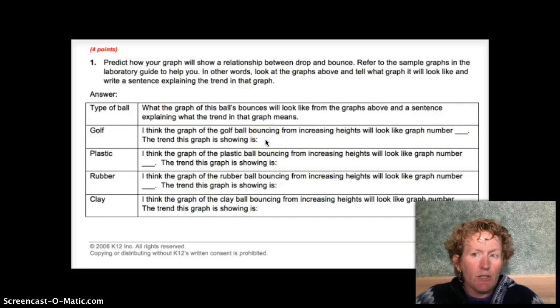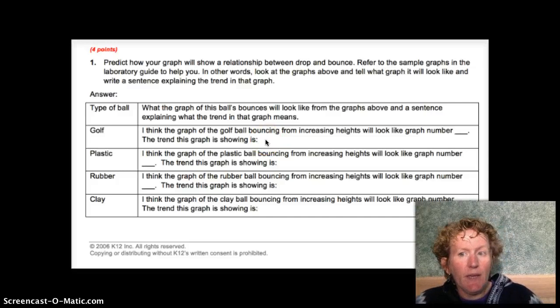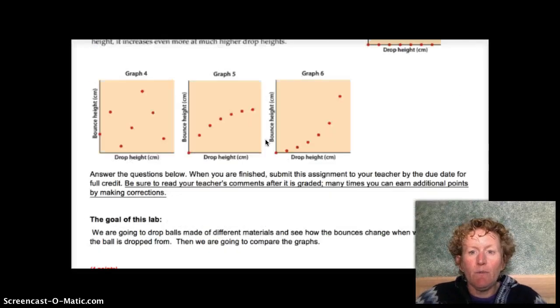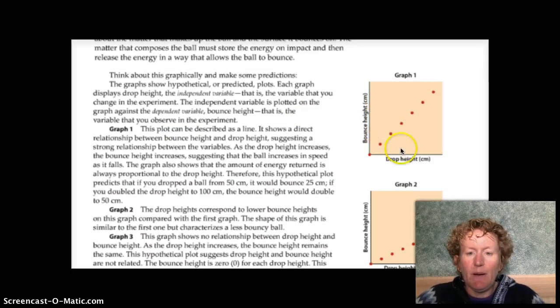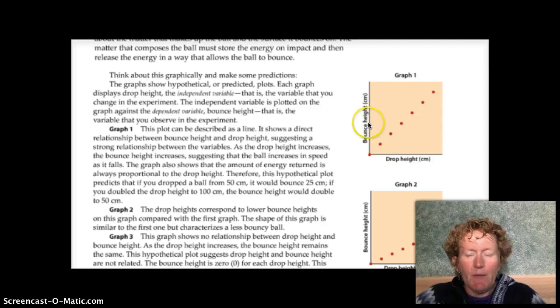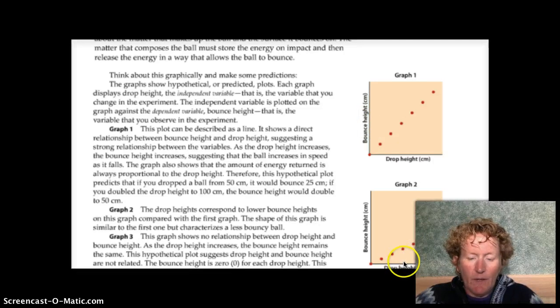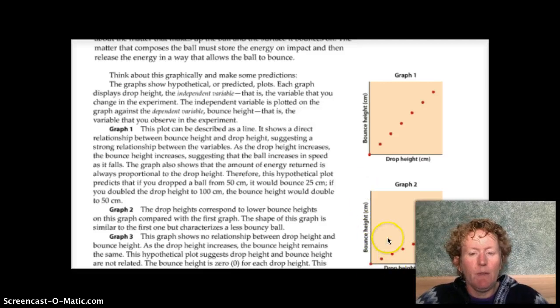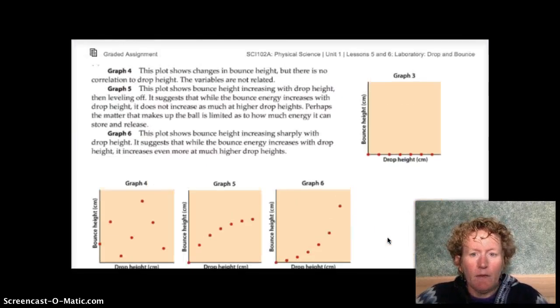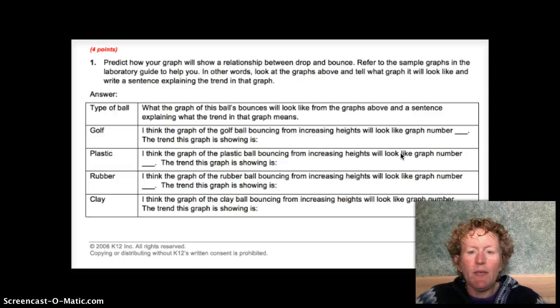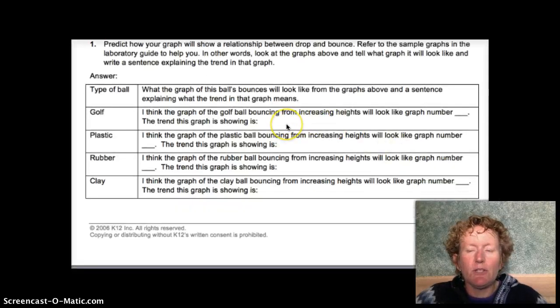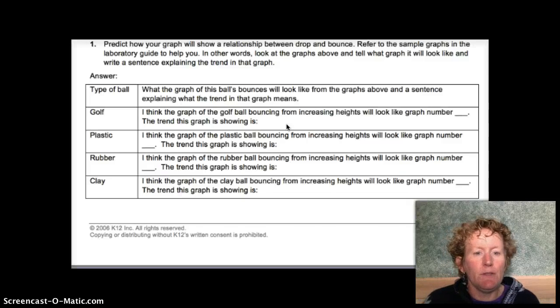The trend that this graph is showing, well, you have to explain what that trend is. For example, graph number 1, if we go back up here, is showing that drop height and bounce height are going to be about equal if you choose graph number 1. If you choose graph number 2, it shows that drop height right here is going to be a little bit bigger than bounce height. We're going to assume these scales are the same on this graph. Graph number 3, of course, would be like the ball doesn't bounce. So explain, pick a number and then explain what that graph is showing. Explain what the ball is actually doing when it bounces.